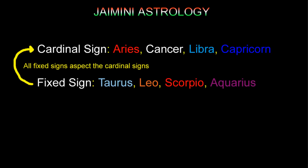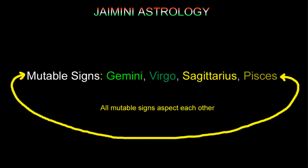Here are the rules: All cardinal signs aspect the fixed signs, except the one fixed sign right next to them. All fixed signs aspect the cardinal signs, except the one cardinal sign right next to them. And all mutable signs only aspect each other — nothing else. These three rules are very important to remember.